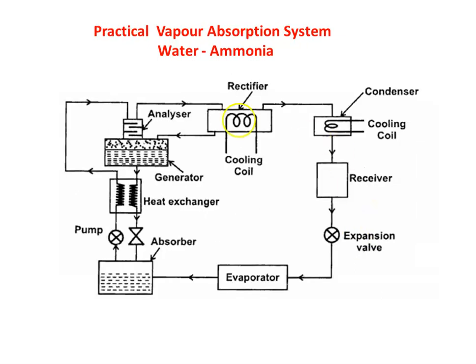Now consider the practical vapor absorption system with ammonia and water — ammonia is the refrigerant and water is the absorbent. The modification in the practical system includes a heat exchanger, an analyzer, and a rectifier, in addition to the absorber. Other components — condenser, receiver, expansion valve, and evaporator — are similar to the simple system.